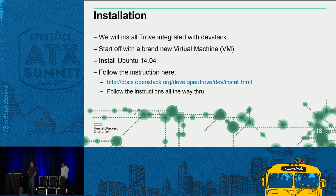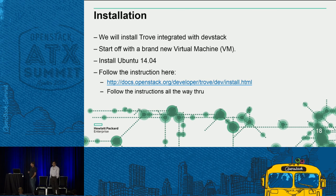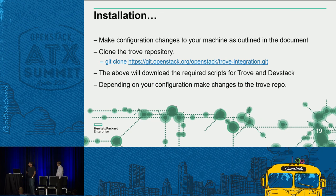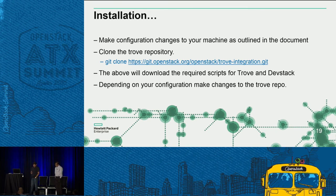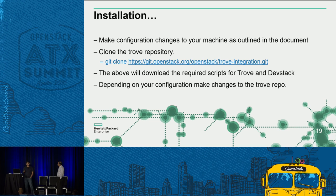We chose VirtualBox, spun up a VM with 16 GB RAM, installed Ubuntu 14.04, and started following the instructions. These instructions will work most of the time; we'll tell you where it may fail. Do a git clone on the URL and you get all the integration scripts for Trove installation that will work with DevStack.